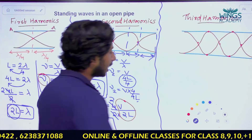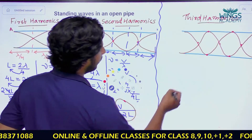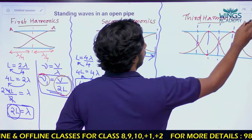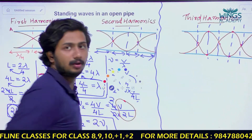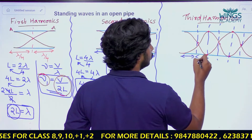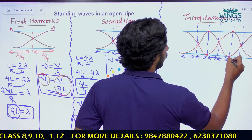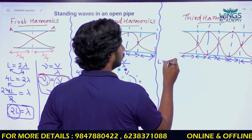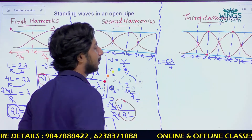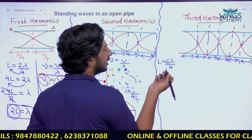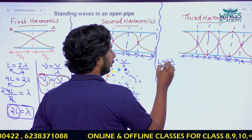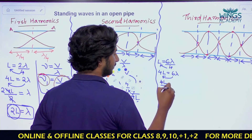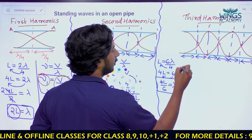For the third harmonics: one, two, three — the length L is equal to 6λ/4. One lambda by 4, then 6 lambda by 4. So 4L = 6λ, which gives lambda equal to 4L/6. This is the frequency equation.